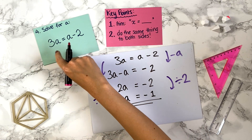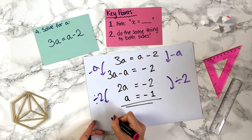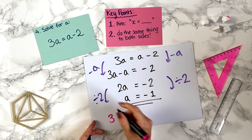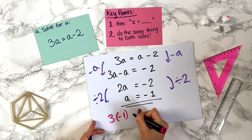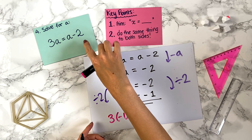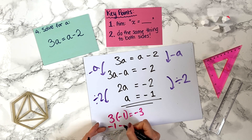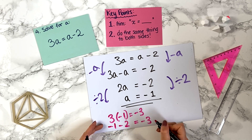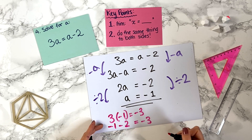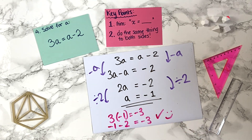Let's check: on the left-hand side, 3 times minus 1 is minus 3. On the right-hand side, a minus 2 is minus 1 minus 2, which equals minus 3. Both sides are the same, so we know we're correct.